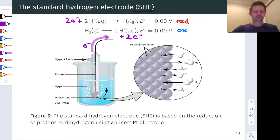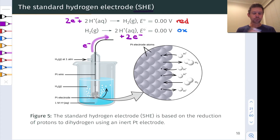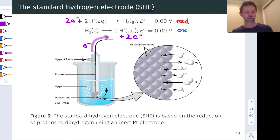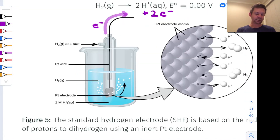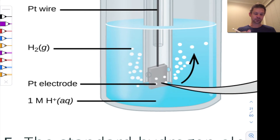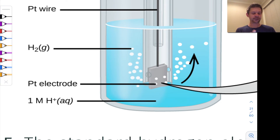Now let's dig into the SHE a little bit more, on a deeper level here. We've seen the half reactions — it's the reduction of two protons to form H₂, or the oxidation of H₂ to form two protons and two electrons. And an inert platinum electrode is used in the SHE. We can see it right here. And this is helpful because one of the components is a gas — H₂ gas.